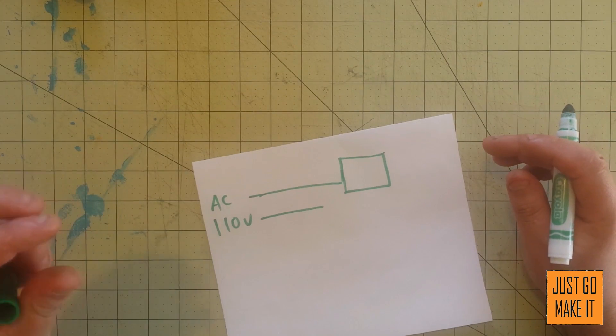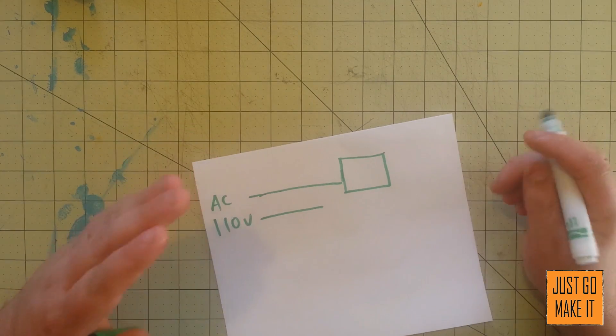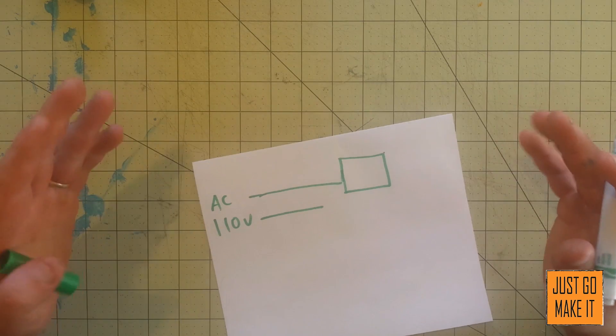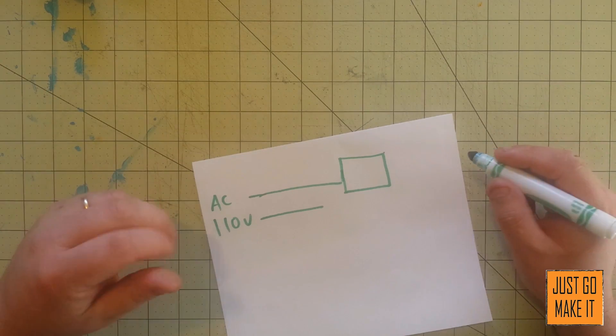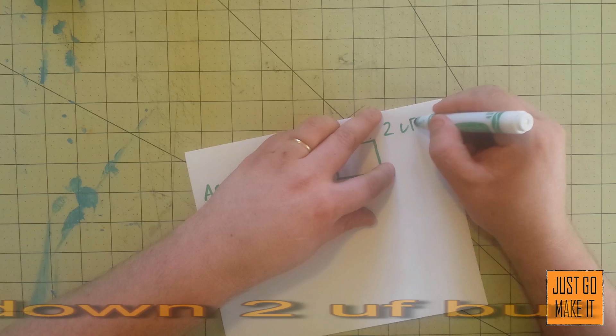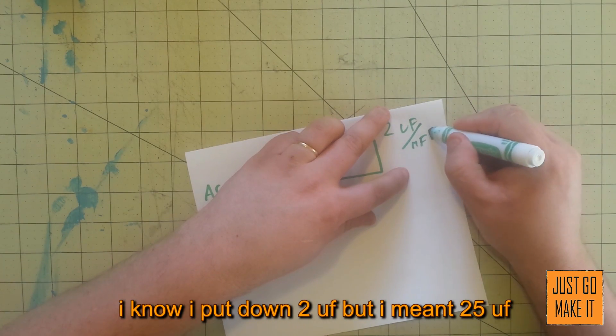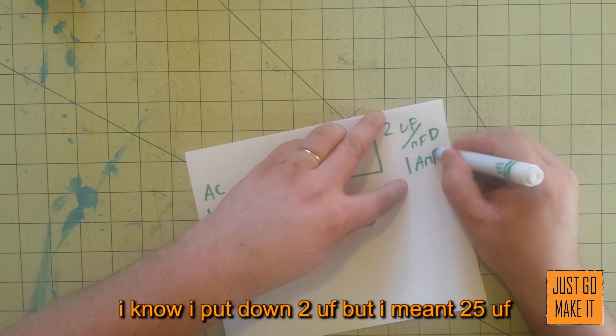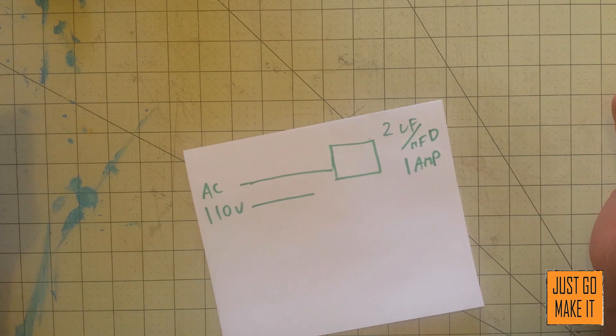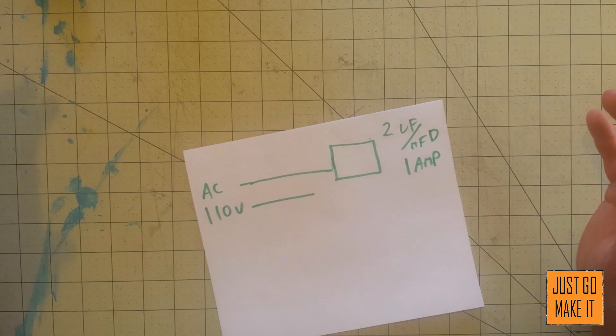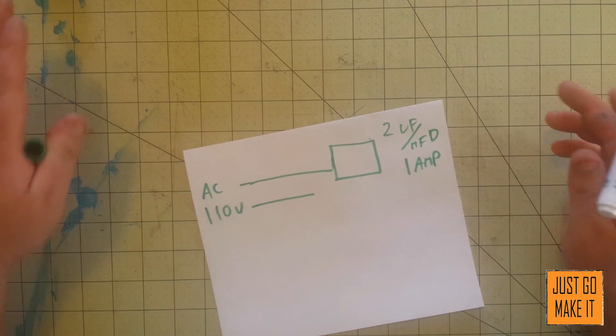Capacitors on this will either have a rating by UF or MFD, which are both the same - microfarads. For every 25 UF or MFD, you get one amp of charging current. So if you want 4 amps of charging current, you'll need a 100 microfarad capacitor, or four 25 microfarad capacitors. It has to be an AC capacitor.